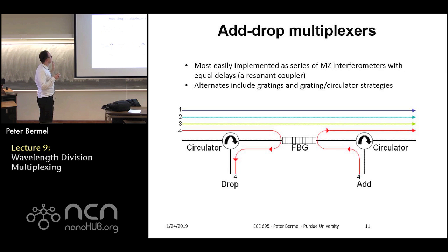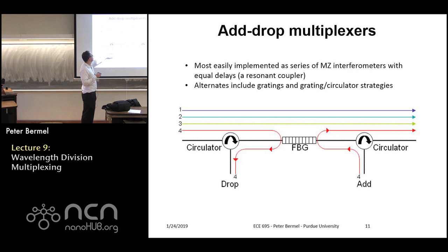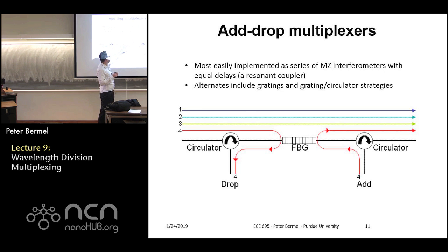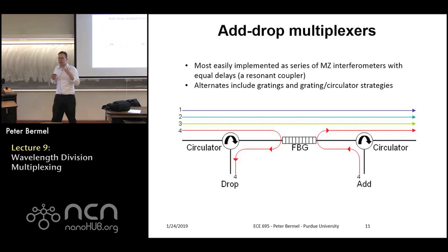Another important component is the optical add-drop multiplexer. It's almost the same as the multiplexer, except you design it so that all interferometers have equal delays — called a resonant coupler. That resonant coupler forces light out and drops it at a targeted wavelength, which can be tuned by changing all phase delays simultaneously to pull out individual wavelengths. This can also be done using fiber Bragg gratings, achieving the same function of isolating particular wavelengths from the through path for use as a local communication channel.